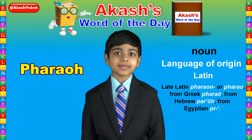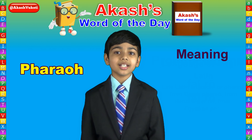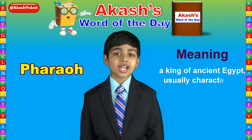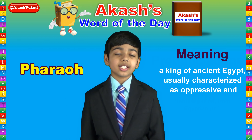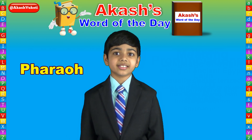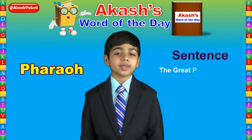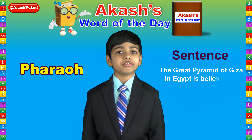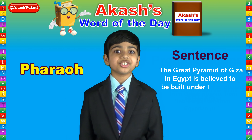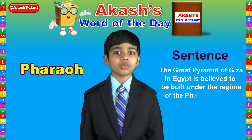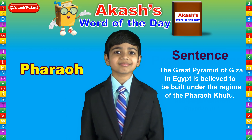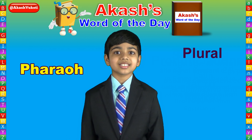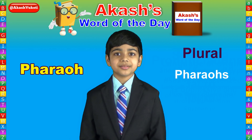Pharaoh means a king of ancient Egypt, usually characterized as oppressive and tyrannical. As in: the Great Pyramid of Giza in Egypt is believed to be built under the regime of the Pharaoh Khufu. The plural of Pharaoh is Pharaohs.